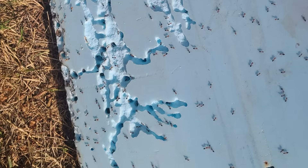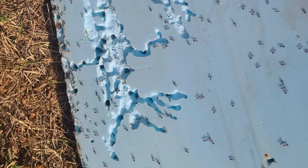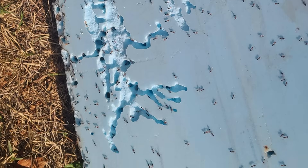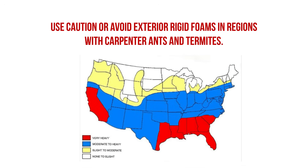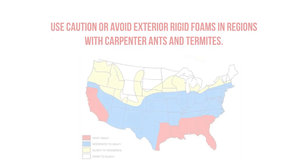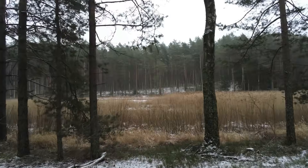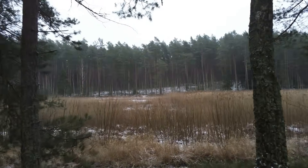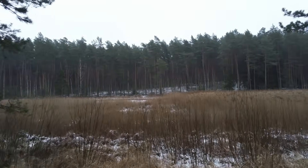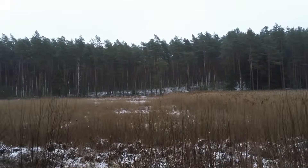Rigid foams are more prone to deterioration from insects like carpenter ants and termites, especially when they get wet, so they aren't always suitable in regions where these pests are common. The local climate and habitat has a direct impact on what pests will be challenging your building.